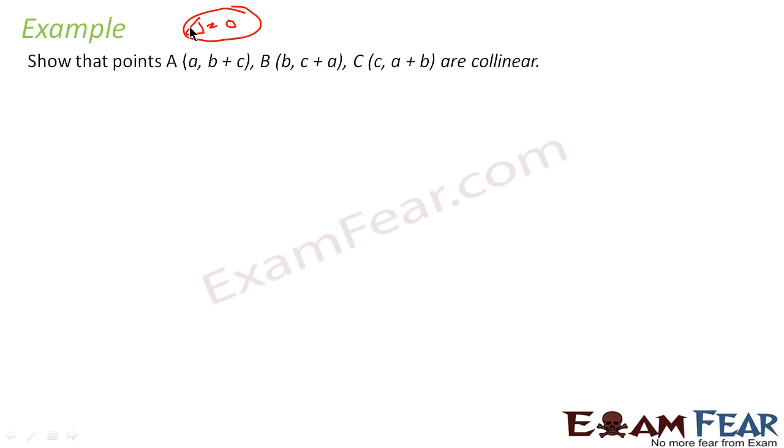So what we can do to prove that these points are collinear, I have to prove that area of triangle ABC is 0. And what is the value of area of triangle? 1 by 2 times the determinant of x1, y1, 1; x2, y2, 1; and x3, y3, 1.